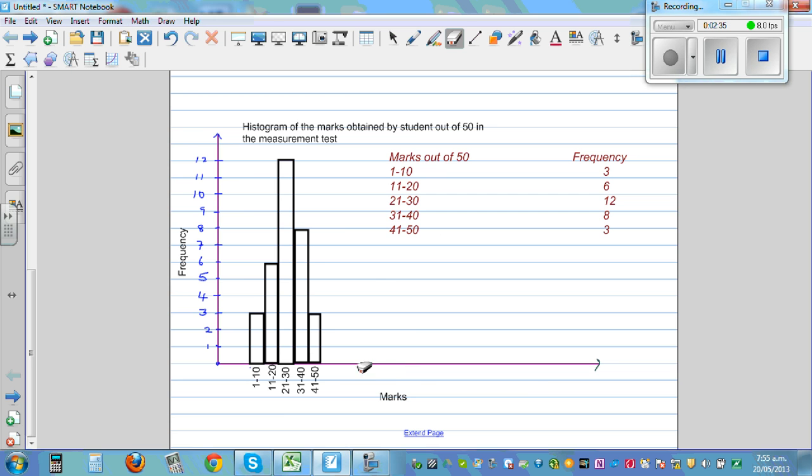So what does this histogram tell? There were three students who got marks between 1 to 10.999. Let me write three here. There were six students who got marks between 11 to 20.999, and that's why this is joined.